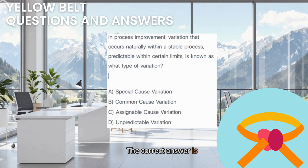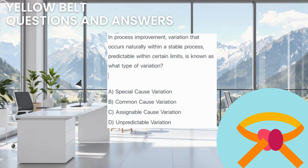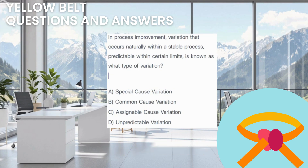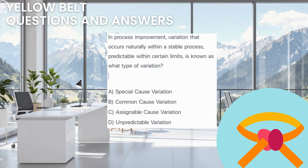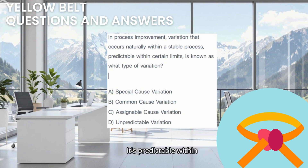The correct answer is B. Common Cause Variation. Common Cause Variation refers to the inherent natural variability present within a stable process. It's the result of the combined effect of many small, unavoidable factors built into the system — think of it as the process's background noise. It's predictable within statistically defined limits.